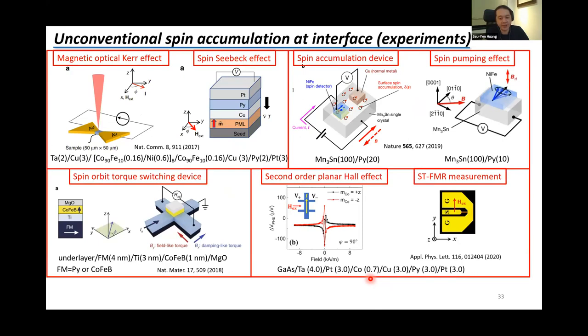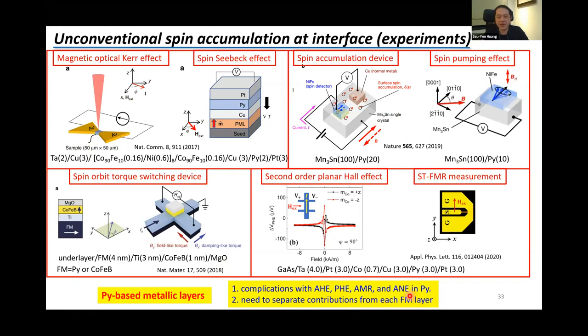Experimentally, it has been reported in several multilayer systems, which often consider two ferromagnetic layers with orthogonal magnetization separated by a normal metal. This unconventional spin accumulation has been measured by magneto-optical Kerr effect (MOKE), also reported by Professor Feng, and the magnetization-dependent surface spin-orbit torque and the second-order spin Hall effect. It is also reported in magnet/normal metal heterostructures by non-local measurement and spin-power measurement. All these systems are permalloy-based metallic layers with complications from charge contributions in metals, including anomalous Hall, planar Hall, and AMR. Therefore, it is very difficult to clearly explore these novel spin accumulations, not to mention quantitative analysis and conversion efficiency.